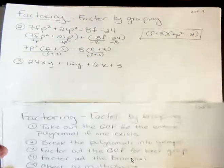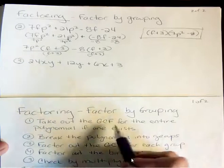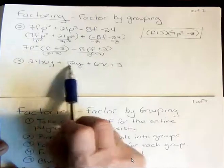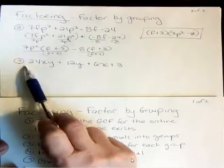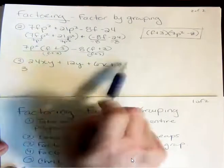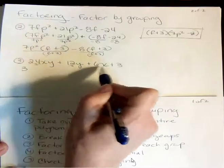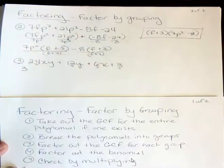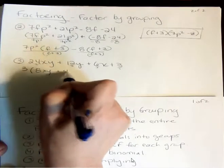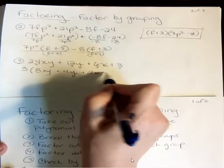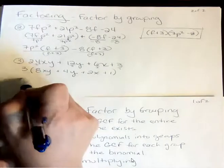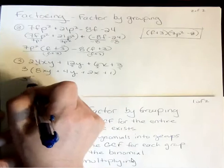Let's look at example three. The first thing I want to do is check if there's a greatest common factor for the entire polynomial. I have 24, 12, 6, and 3 — so 3 goes into all of those. x is not in all of them, y is not in all of them — it's just 3. So I divide each term by 3, and what's left is 8xy + 4y + 2x + 1.